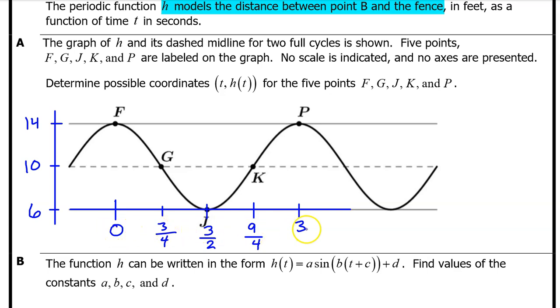Now we have the input coordinates and the output coordinates for all five points. Point F is at zero comma fourteen. Point G is at three fourths comma ten. Point J is at three halves comma six. Point K is at nine fourths comma ten. And point P is at three comma fourteen. And that's it for part A.